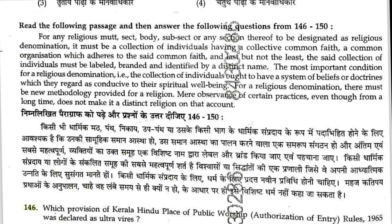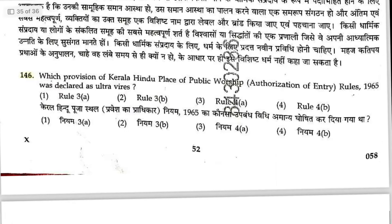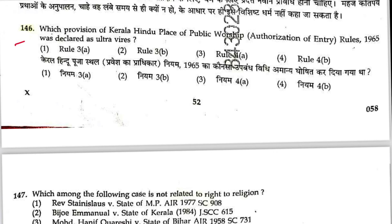The next paragraph covers questions 146 to 150 relating to any religion, sect, body, or sub-sect. Students should pause the video and read the paragraph before continuing. Question 146: Which provision of the Kerala Hindu Places of Public Worship (Authorization of Entry) Rules was declared ultra vires? Rule 3(b) was declared ultra vires in the relevant case. Answer is 2.